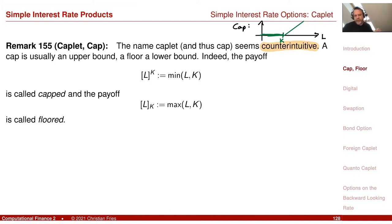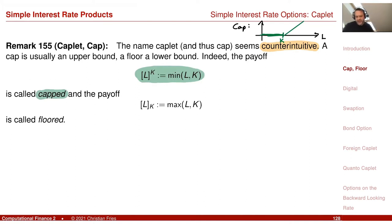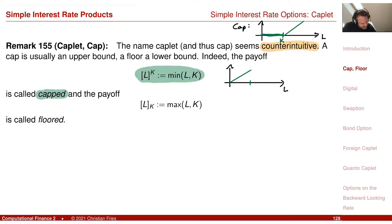You can also encounter these names — capped and floored — for coupons, and there it is what you would intuitively think. A capped payoff means we take the interest rate and cut off the coupon at a level K, paying the minimum of L and K. A floored coupon floors your payment at a certain level K, paying the maximum of K and L.